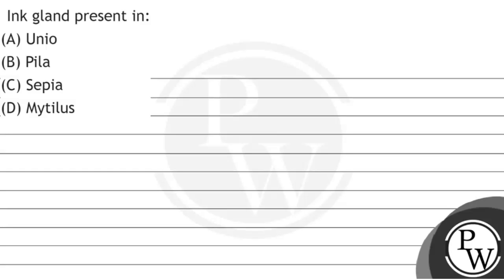Hello guys, let's read the question. So the question is: ink gland is present in which organism? A. Unio, B. Pila, C. Sepia, or D. Mytilus.